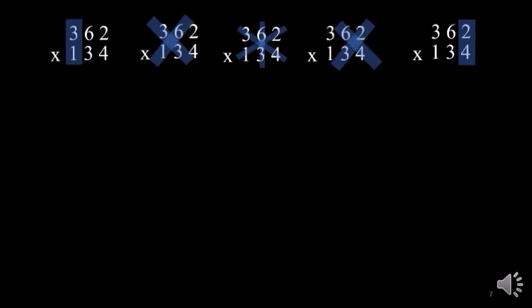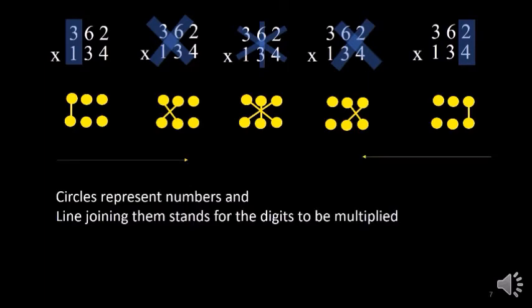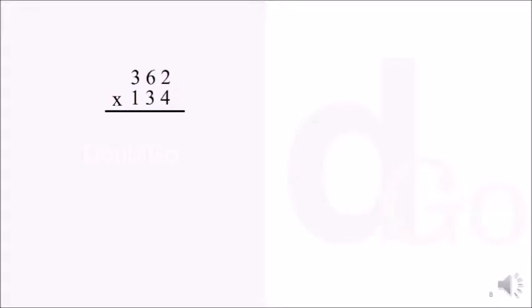We are never taught the higher versions of vertically and crosswise, so we will see them now. To multiply 3-digit numbers, we extend our previous idea to larger numbers. We will use a knitting pattern to remember the multiplication — each dot represents a digit and the line joining the dots stands for the digits to be multiplied. We can follow the pattern from left to right or from right to left and arrive at the same answer. So let us multiply 362 and 134.